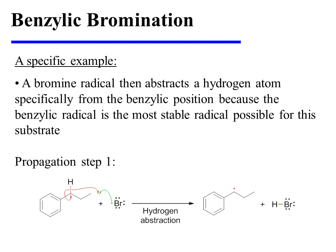In propagation step one, a bromine radical then abstracts a hydrogen atom specifically from the benzylic position because the benzylic radical is the most stable radical possible for this substrate. Note that the byproduct HBr is also produced during this step.